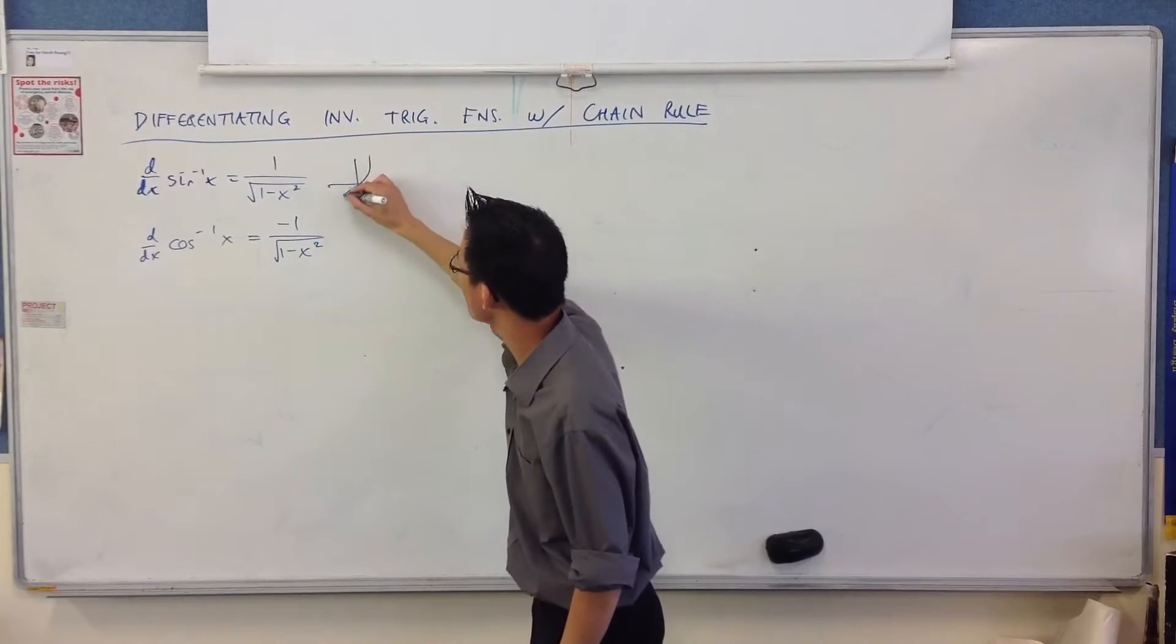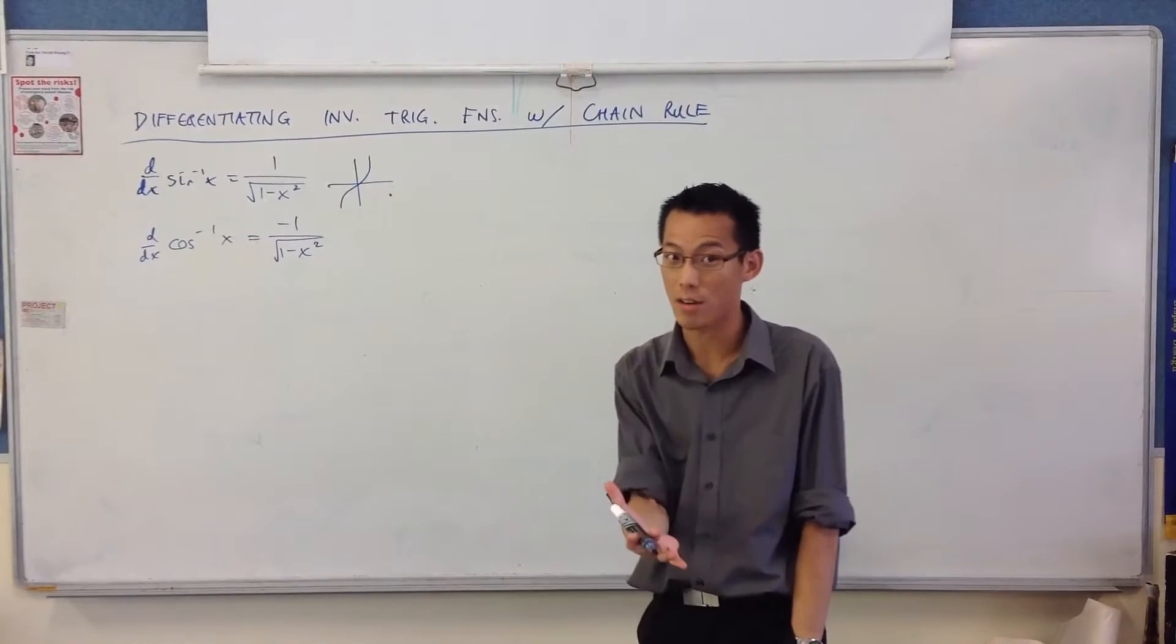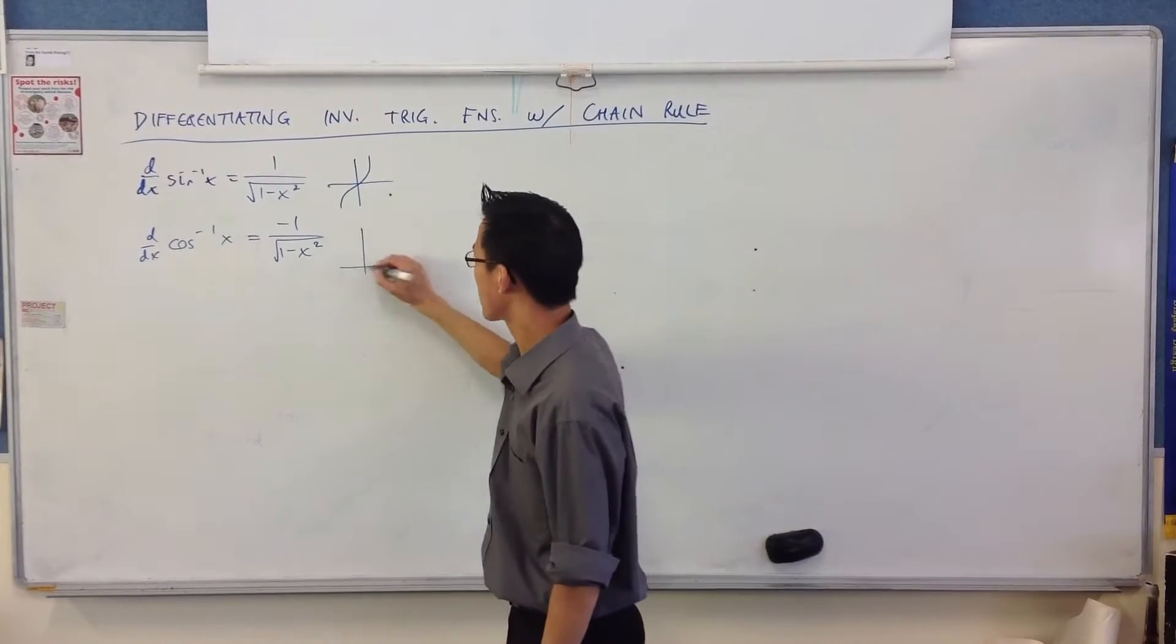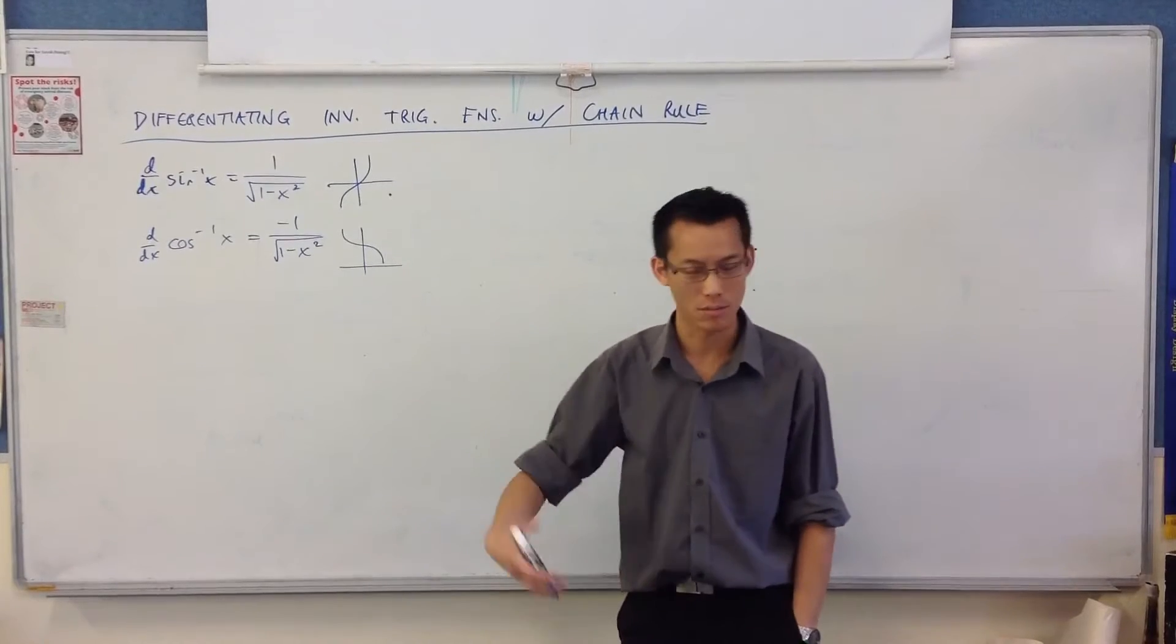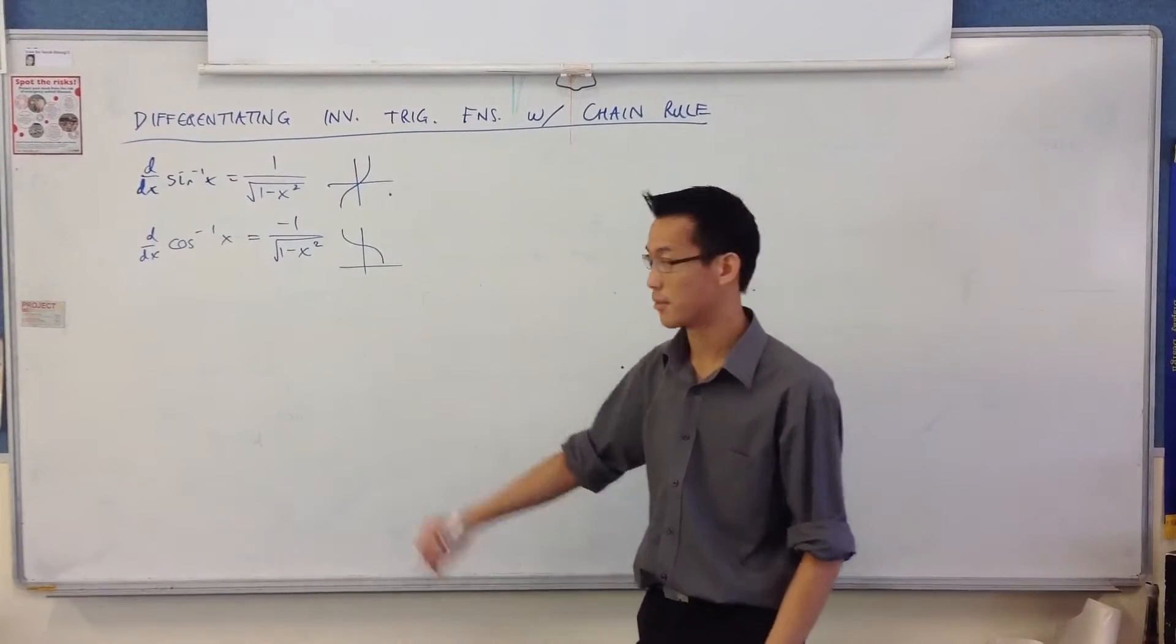I like to have the picture of the graphs in my head, okay? Because you need to know the graphs anyway, right? There's sine and there's cos. So one is increasing, one is decreasing. That's where you get a plus or minus one, okay?